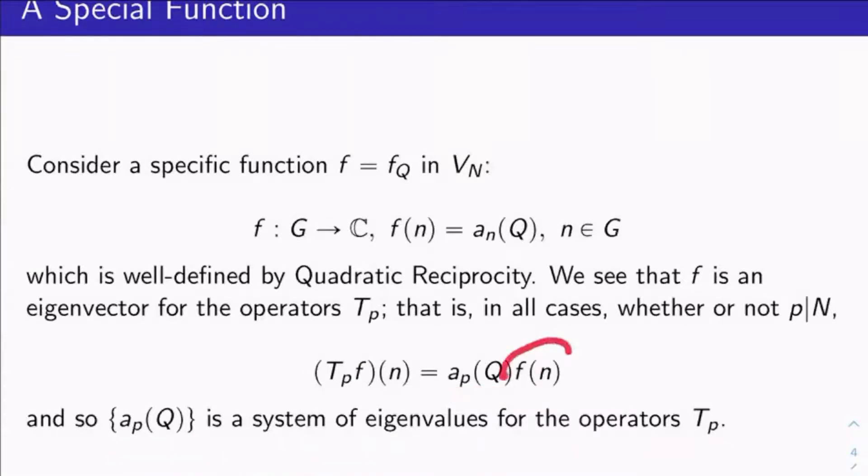So the f here, it's your eigenvector, and the eigenvalues are the a_p(Q)s, one for each p. Okay. So who cares? So this is quadratic reciprocity through a different light than maybe you've seen it before. But let's keep going.